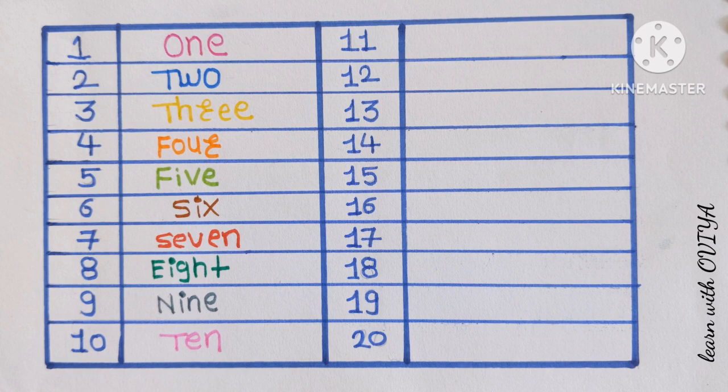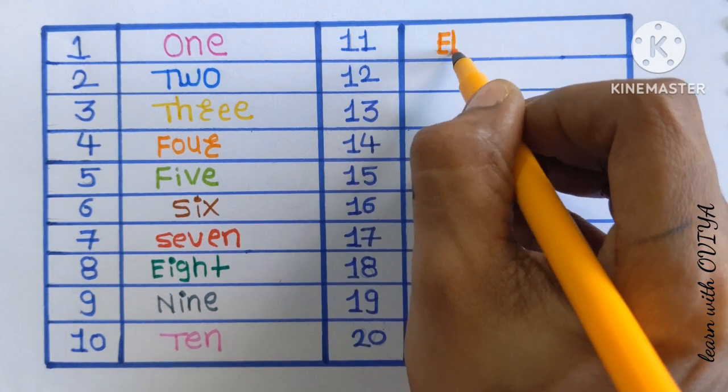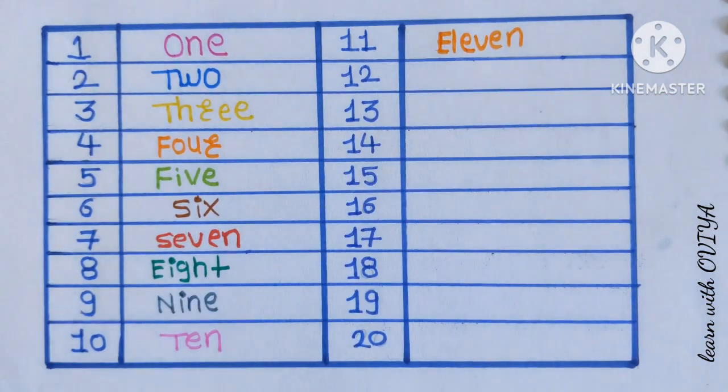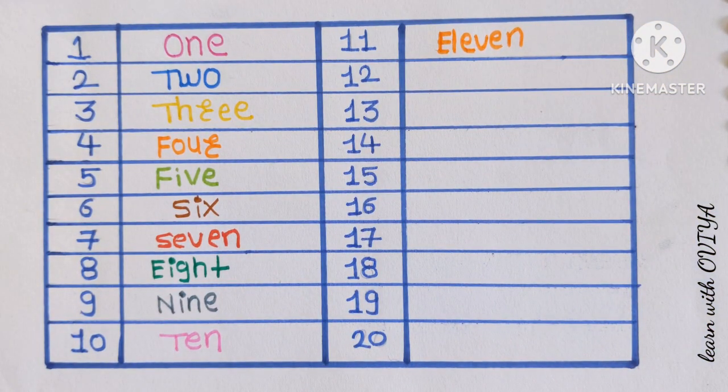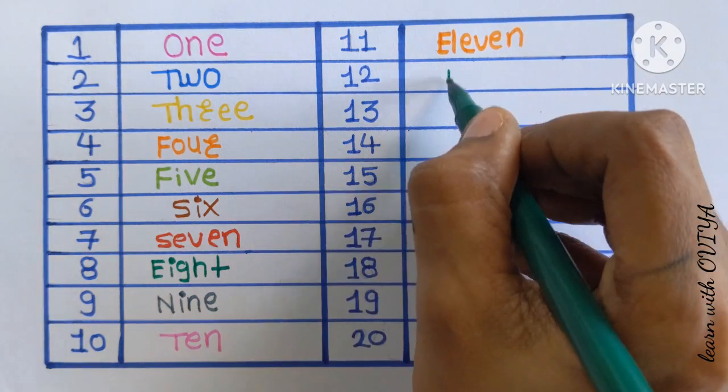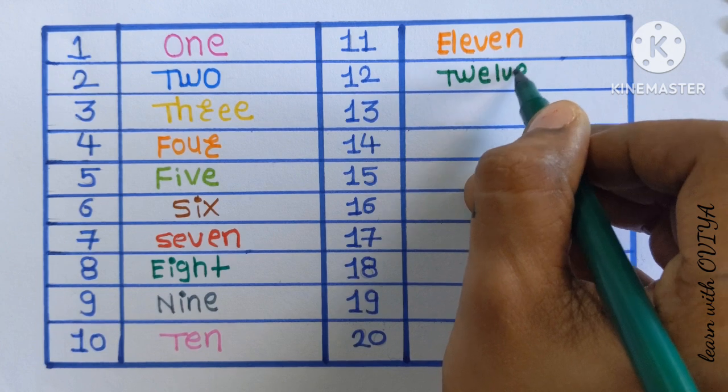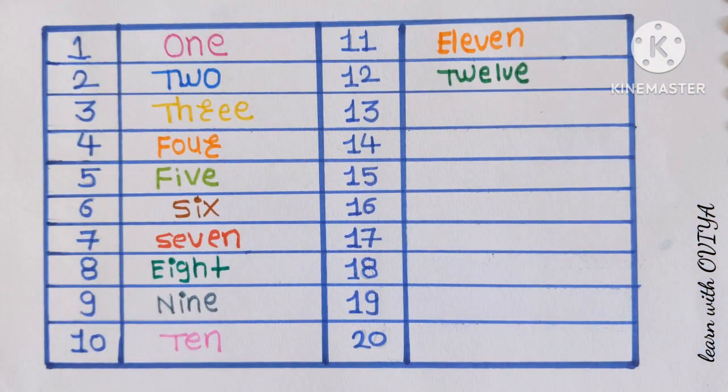Number 11. E-L-E-V-E-N. 11 in an orange color. Next is number 12. 12. T-W-E-L-V-E. 12, dark green color.